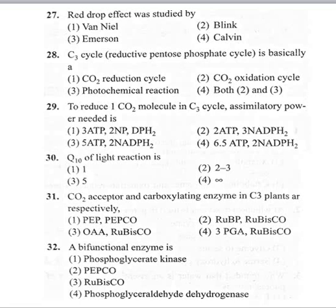Coming to the 29th question: to reduce one carbon dioxide molecule in the C3 cycle. Remember, the C3 cycle has three steps: carboxylation, reduction, and regeneration. 3 ATP and 2 NADPH2 molecules are required to reduce one carbon dioxide molecule in the C3 cycle. So the first option — 3 ATP and 2 NADPH2 — is correct.